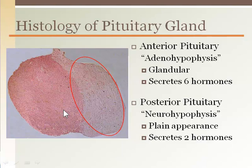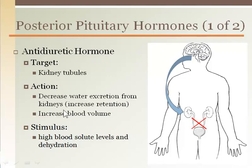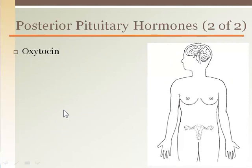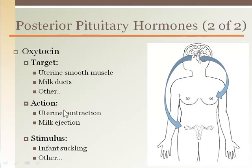Let's look at some hormones produced from the posterior pituitary. Anti-diuretic hormone targets the kidney tubules to retain water under conditions of dehydration or high solute or electrolyte concentration. The result of reduced water excretion is balanced electrolyte levels and increased blood volume — it acts as a "don't pee" hormone. Oxytocin is a powerful hormone that targets smooth muscle, especially the uterus and milk ducts in the breast. It stimulates uterine contraction during labor, milk ejection, and plays a role in orgasm in both men and women.